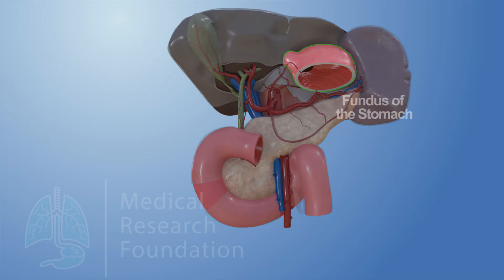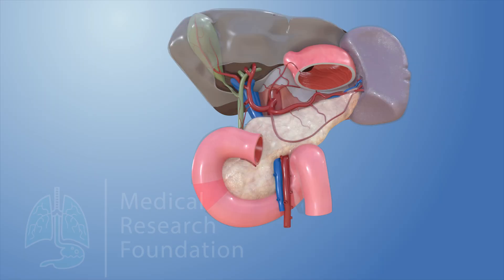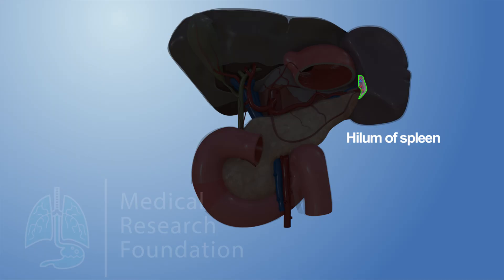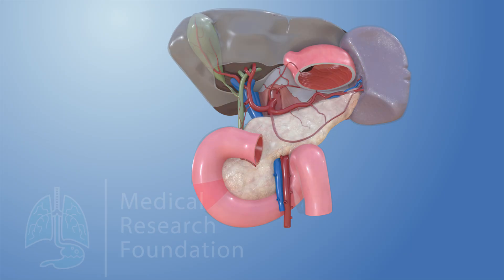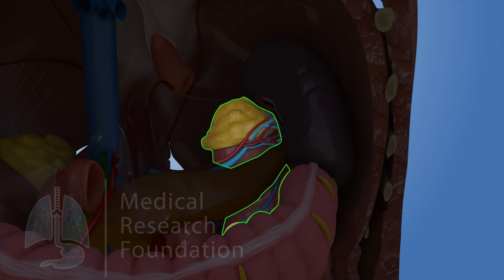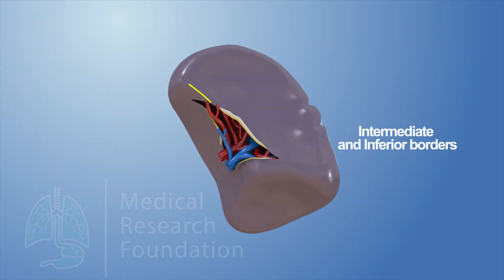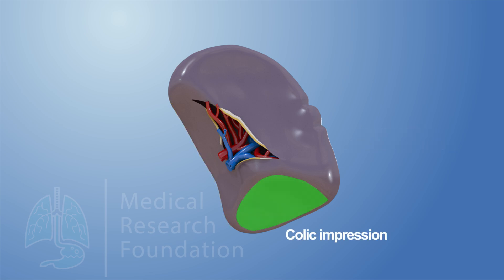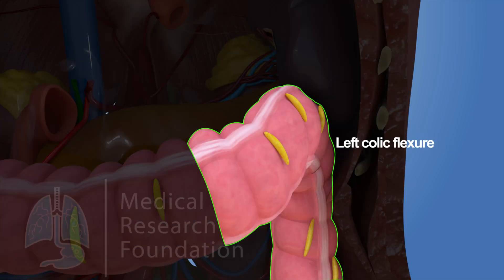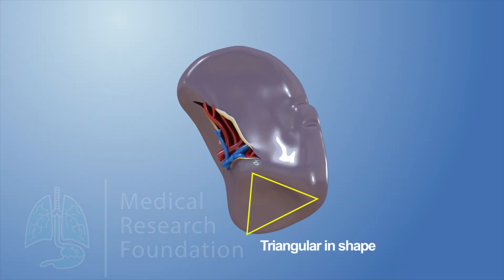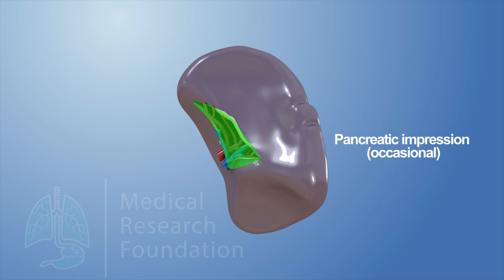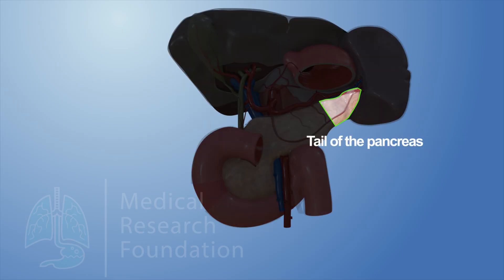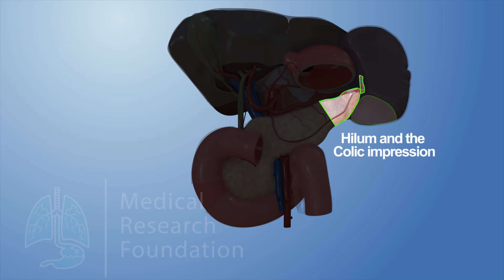The gastric impression is produced by the fundus of the stomach. It is the largest impression and lies between the superior and intermediate borders. The hilum of the spleen is located in the lower part of this impression. The renal impression is produced by the left kidney and lies below and behind the gastric impression, between the intermediate and inferior borders. The colic impression is produced by the left colic flexure, is triangular in shape, and situated in front of the lateral end. The pancreatic impression, which is occasional, is produced by the tail of the pancreas and is located between the hilum and the colic impression.